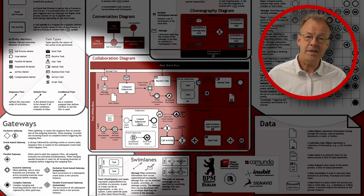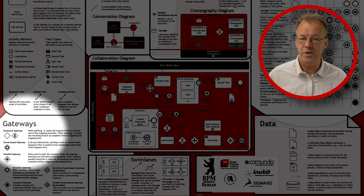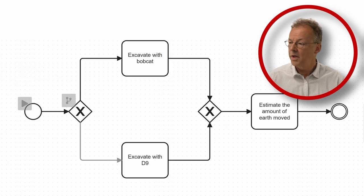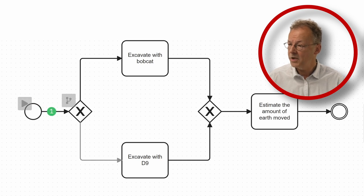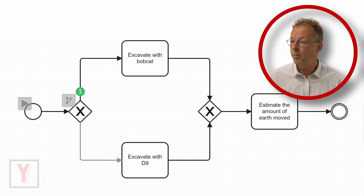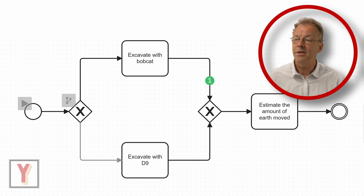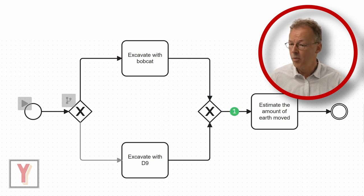In BPMN this is modeled with a joining exclusive gateway. So here we have the first case, we excavate with Bobcat and then we go directly to estimate the amount of earth moved.